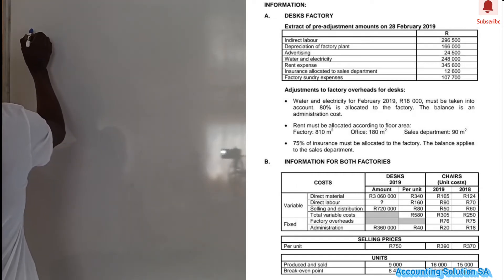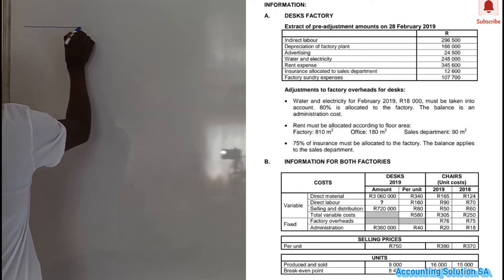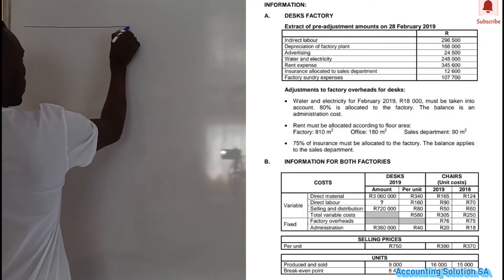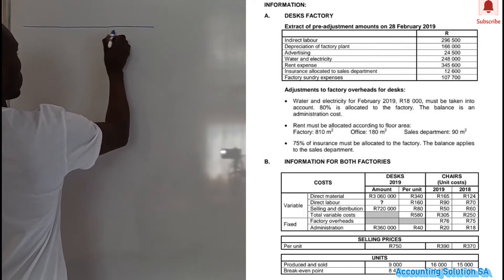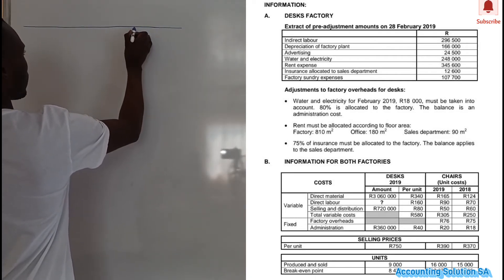The first task is to lay down the format of the factory overhead note. They didn't say prepare a ledger account, so we are going to draw a note like this.